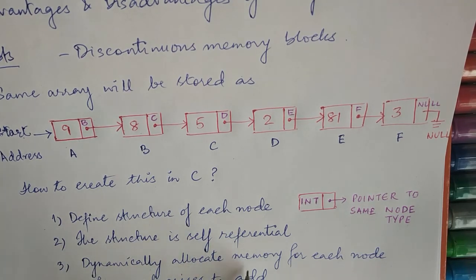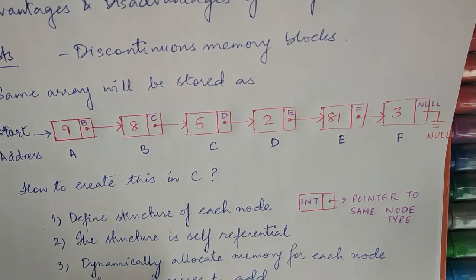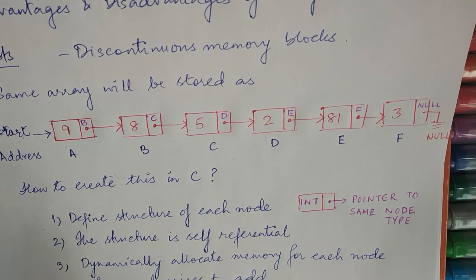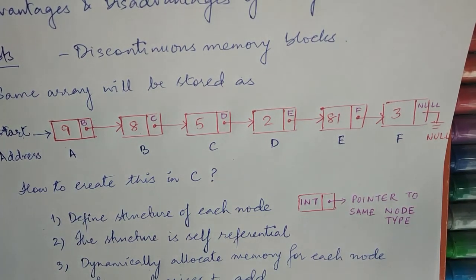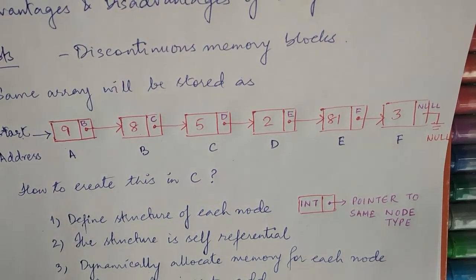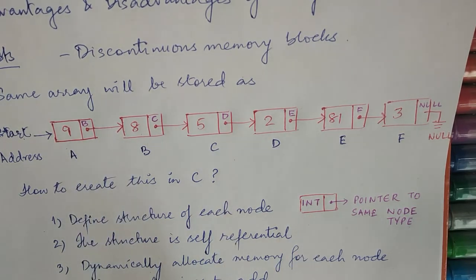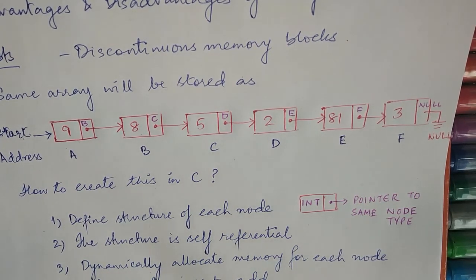Then we dynamically allocate memory for each node whenever the need arises. So I'm not going to allocate memory for 10 nodes of linked list. I can just allocate memory for a linked list node one at a time. I'll do that and then after that I will link nodes to the other node. So I'll create a node then I'll link it to other nodes as and when the need arises.